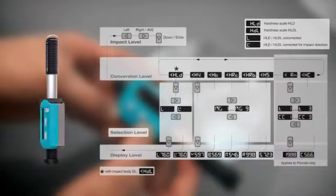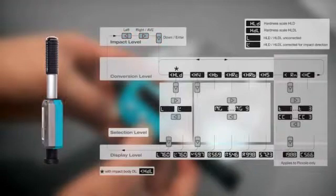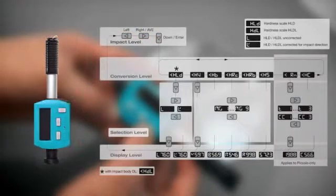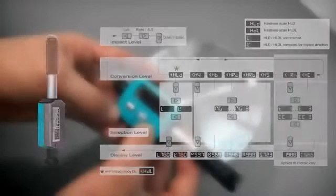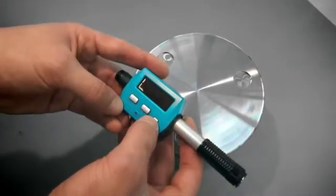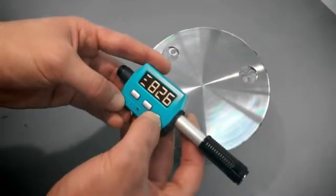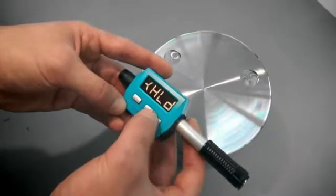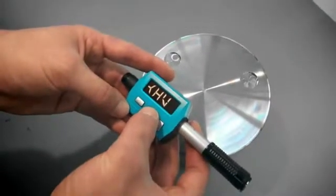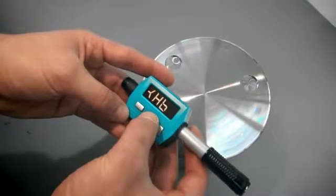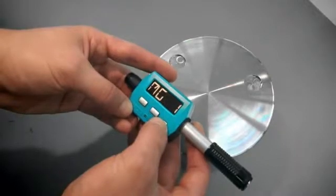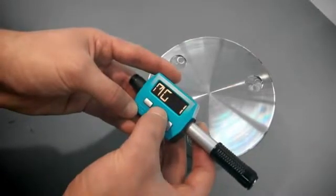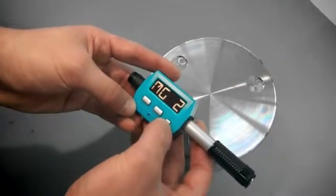If you need results in other hardness scales such as Vickers, Brinell, Rockwell, or Shore, the EchoTip Piccolo can perform the required conversions. Enter the conversion scale menu level by pressing the down key. If you press the right key, the instrument displays the different hardness scales. Select the required hardness scale by pressing the down key again. Select the appropriate material group by pressing the right or left key and confirm with the down key.